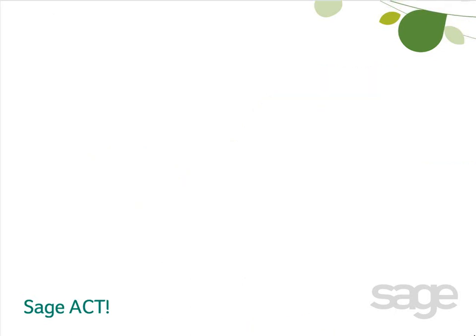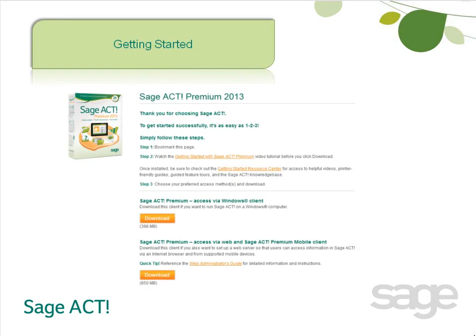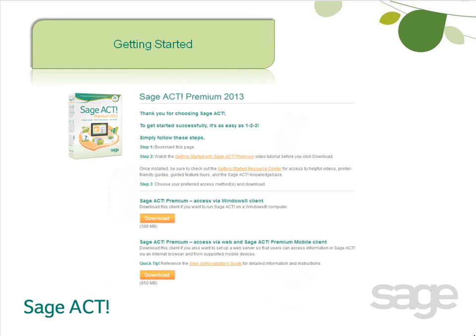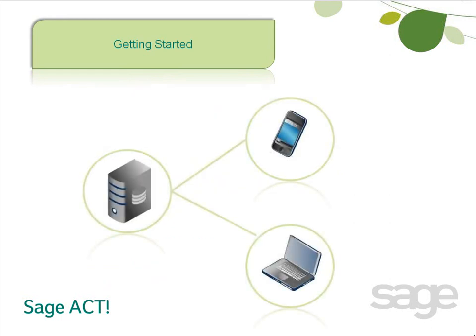Next, let's learn about getting started with your installation and deployment. Sajak Premium Access via Web is included with your purchase of Sajak Premium. When you access the download page, you'll have the option to download Sajak Premium Access via Web. If you're interested in centralizing administration of your database and enabling users to access Sajak data from a variety of internet-connected devices, then you'll need to perform a few additional configuration steps. This video provides a high-level overview of the process.